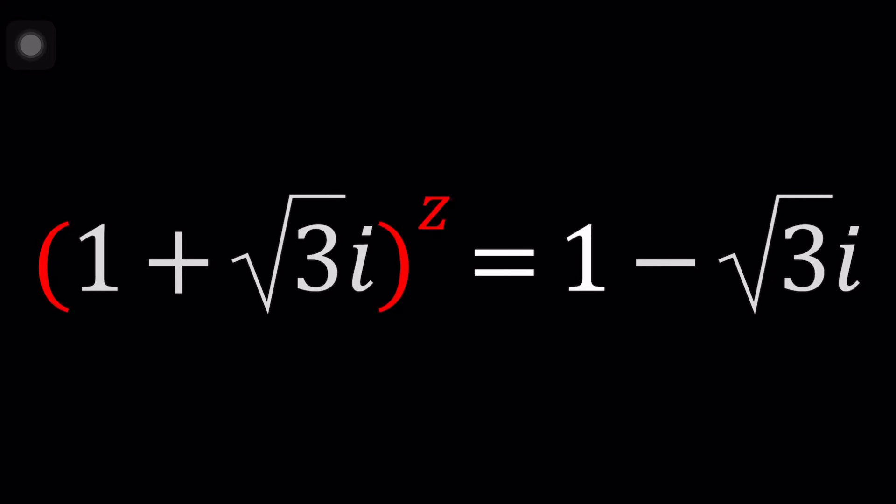Hello everyone, welcome to a plus bi. This channel is all about complex numbers and in this video we're going to be solving a very nice exponential equation with complex numbers. We have 1 plus square root of 3i to the power z, as you can see in red, equals 1 minus the square root of 3i.